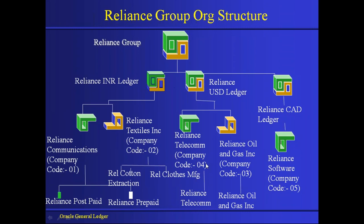Any transaction entered between these two companies should be — in accounting terms — an arms-length transaction at an arms-length price. They should not take advantage of the relationship to charge a low price or make adjustments. Reliance Telecom should treat Reliance Oil and Gas the same as any external company. That is called an intercompany transaction.